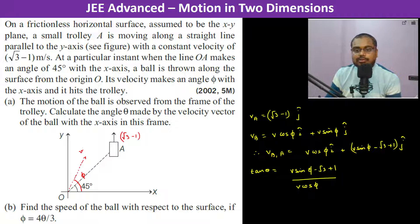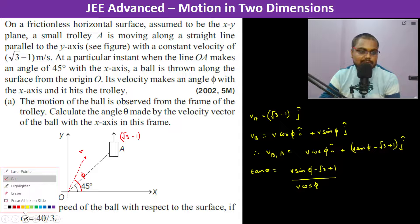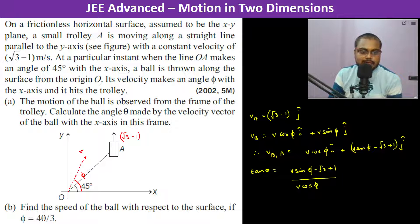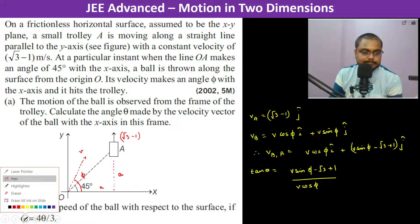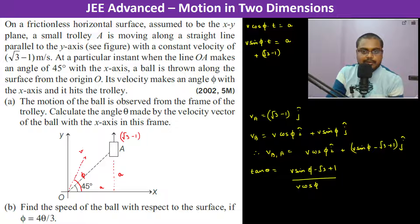Since the ball hits the trolley and the line OA makes an angle of 45 degrees with the x-axis, we can set up geometric equations. In time t: v·cosφ·t = a, and v·sinφ·t = a + (√3 − 1)·t, since the trolley has moved up by (√3 − 1)·t.